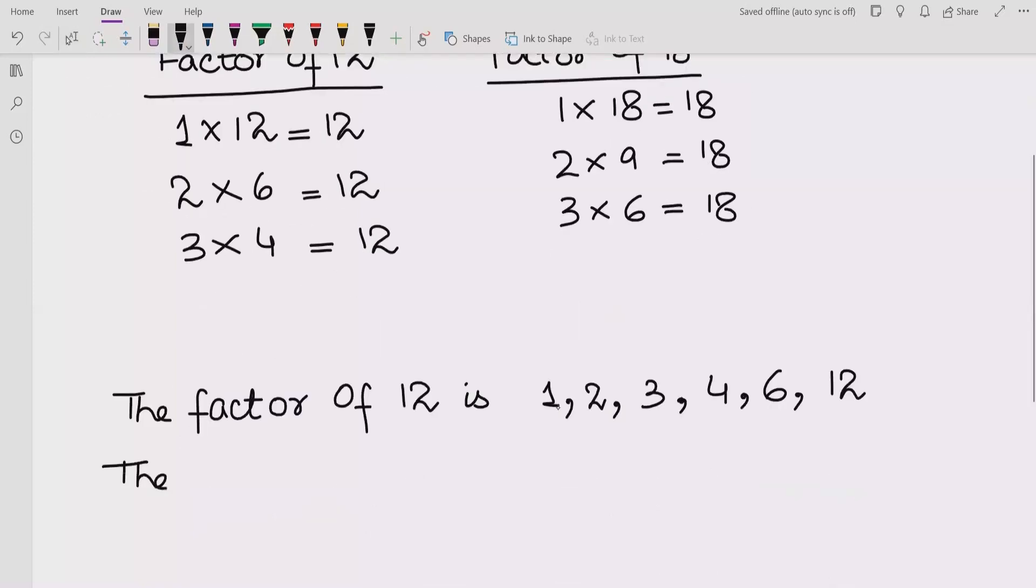9 multiplied by 2 is 18. So the factors of 18 are 1, 2, 3, 6, 9, and 18.